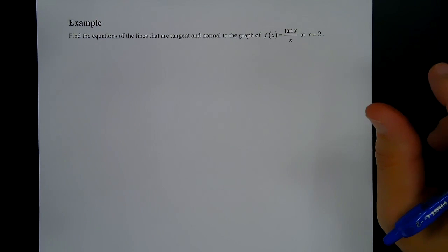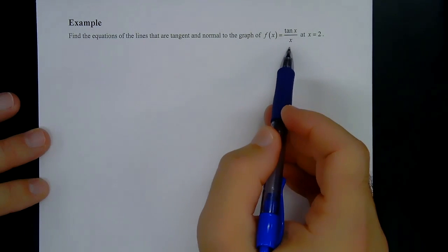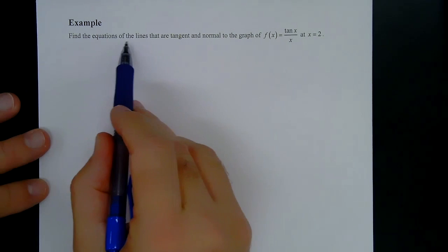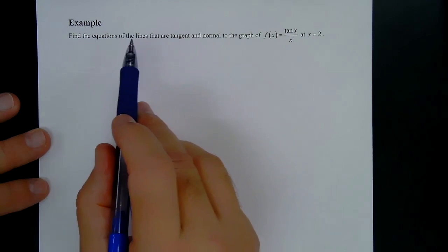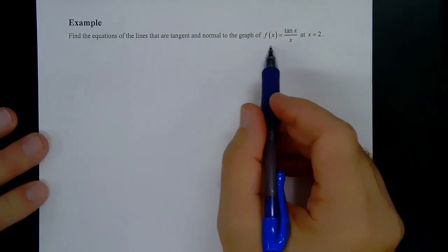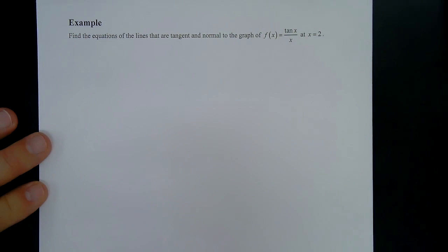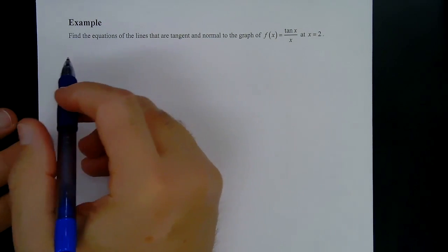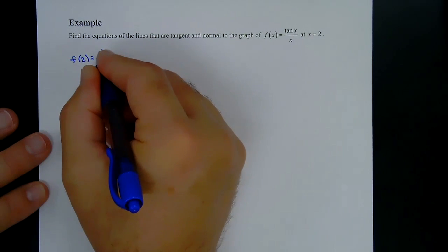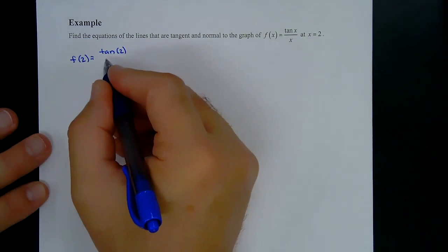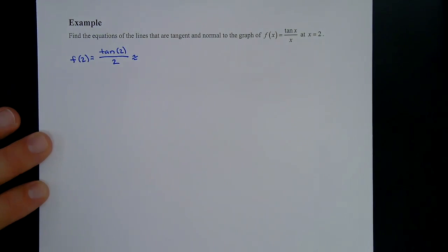Next problem: find the equations of the tangent and normal lines to the graph of f(x) = tan(x)/x at x = 2. First, find the point: f(2) = tan(2)/2. Using the graphing calculator, that gives approximately −1.093. So our point is (2, tan(2)/2), approximately (2, −1.093).